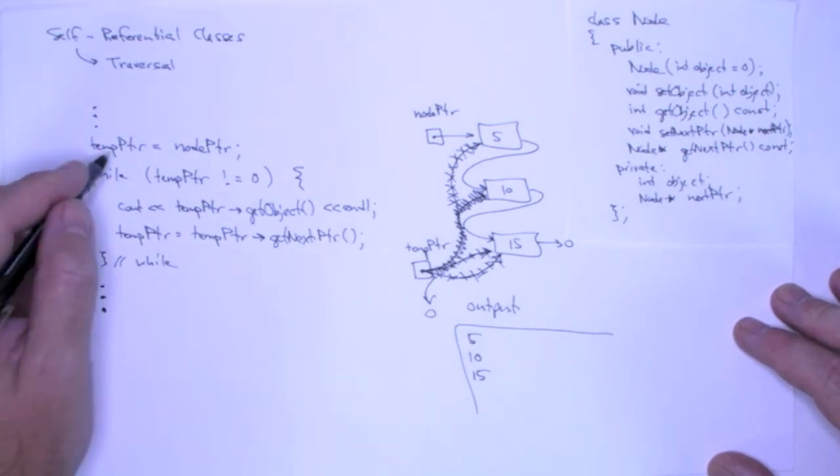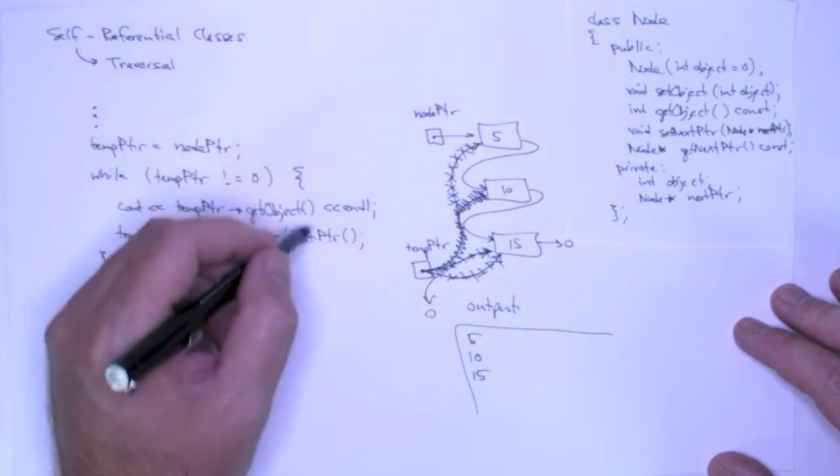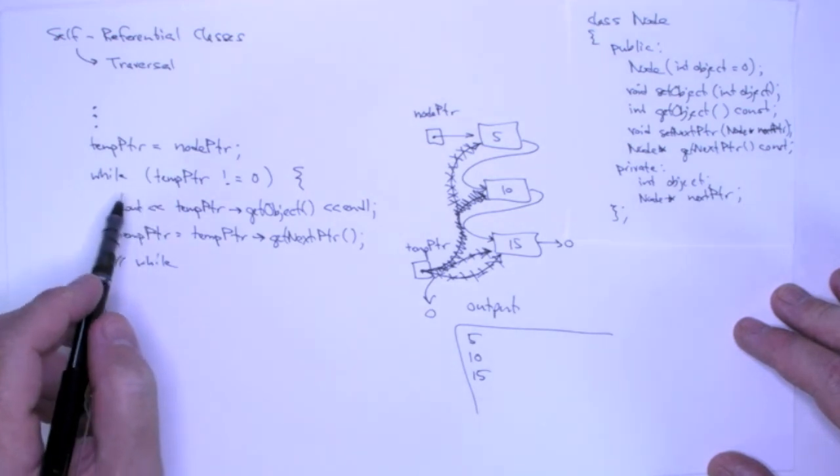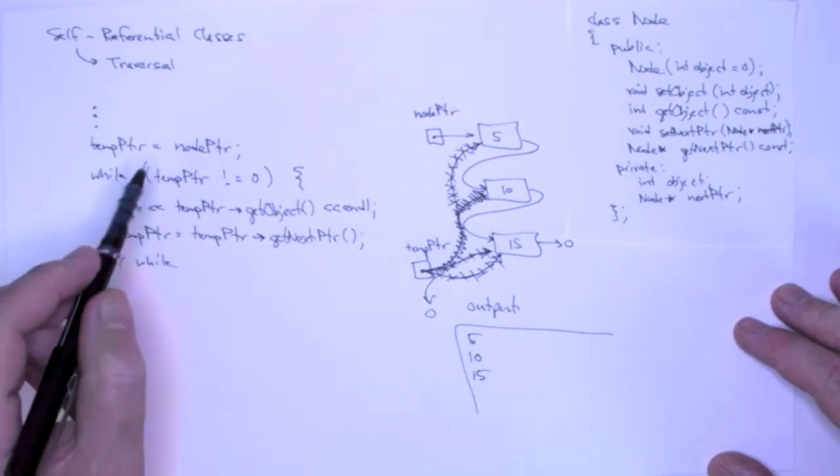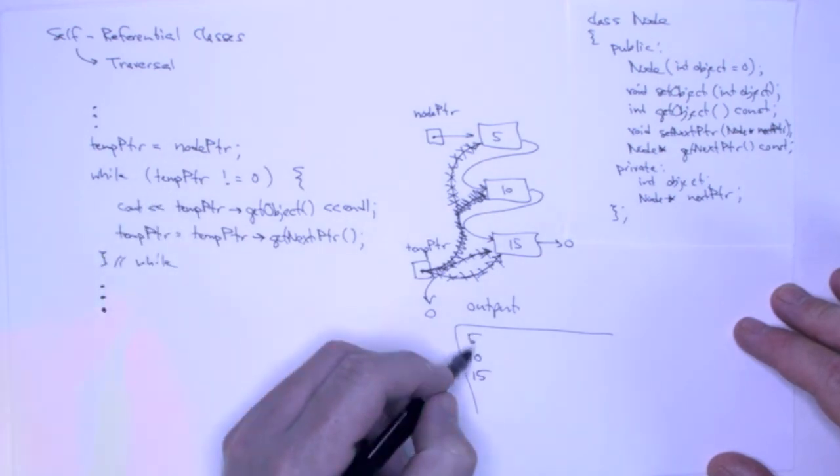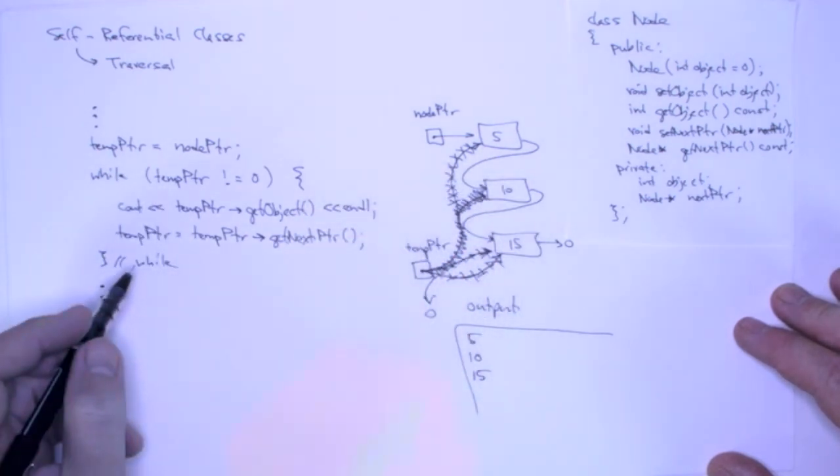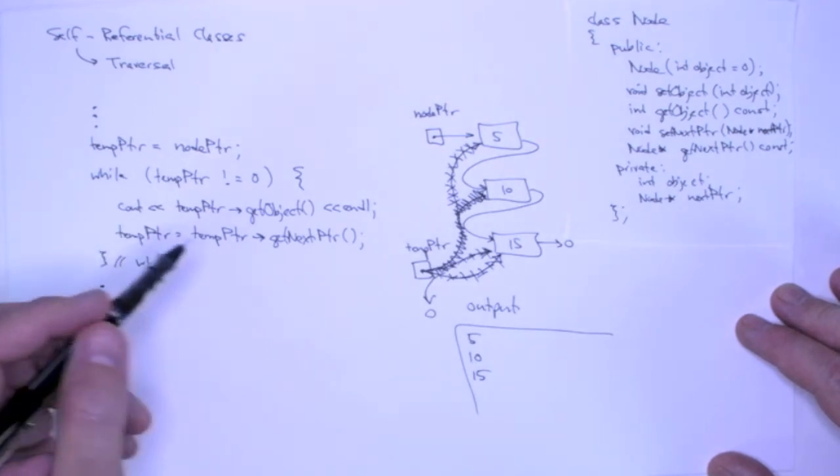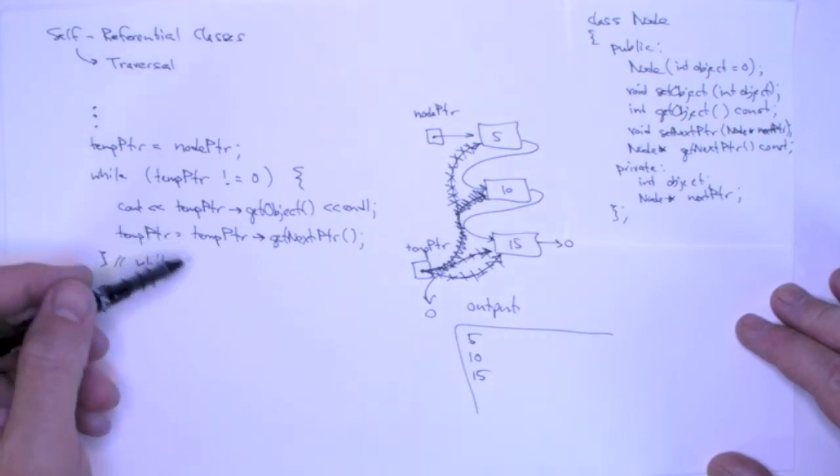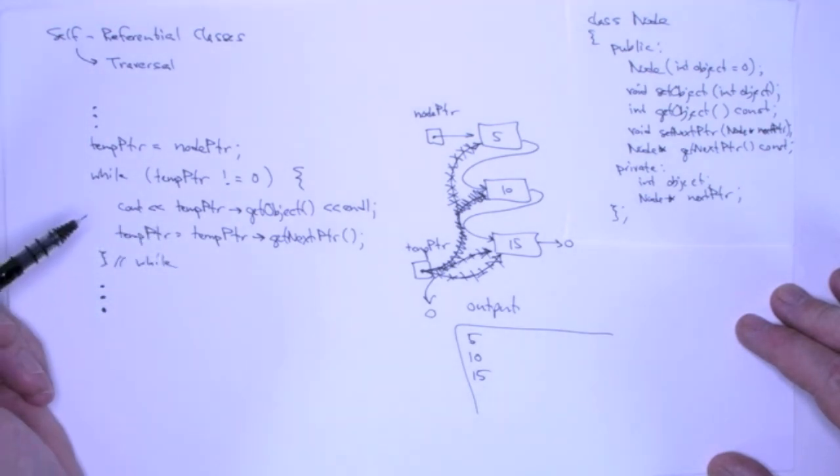So this is a general code pattern for traversing linked lists. And this is a very important piece of code. We are going to use this code if we want to print the elements of the linked list, if we want to find an element, if we want to change all of the elements, if we want to compute the average of the elements. All of these operations involve a traversal.